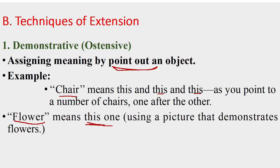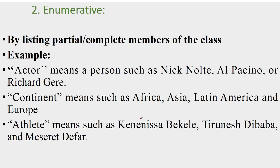Enumerative definition: by listing partial or complete members of the class. This list is called elements. For example, continent means Africa, Asia, Latin America, and Europe — a complete or partial list.